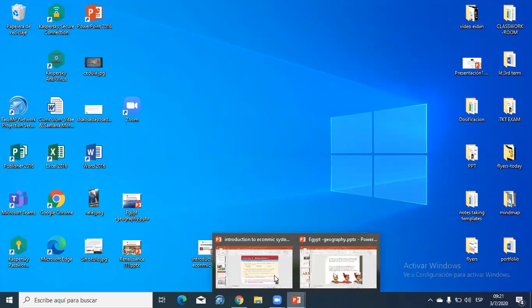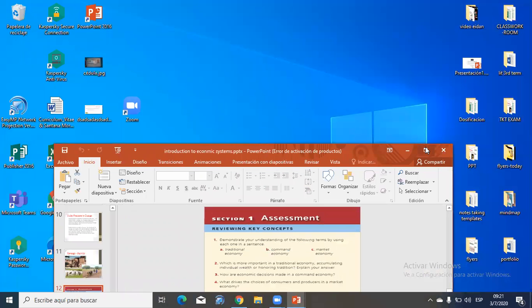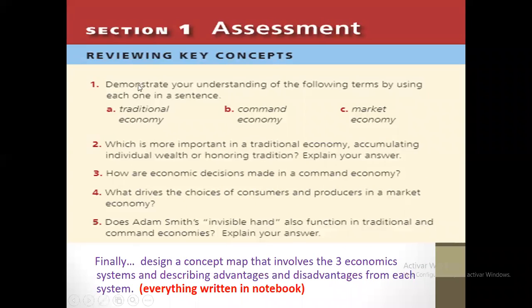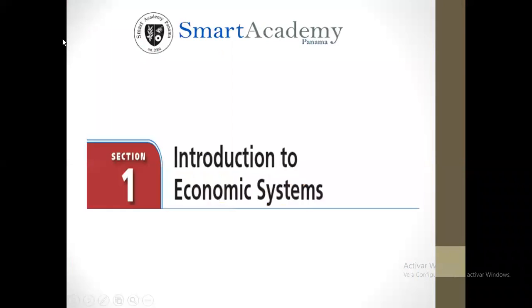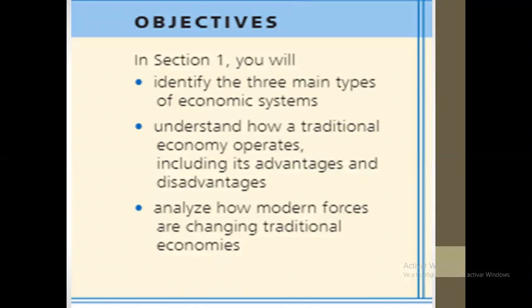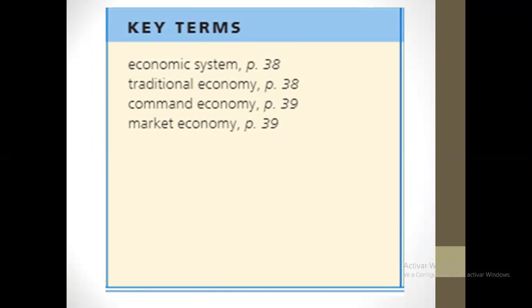Opening the PowerPoint now. Here it is. These are the types of economic systems. Here are the objectives. And here are the key terms or vocabularies: economic system, traditional economy, command economy, and market economy — these are the three types of economic systems that we are going to study.